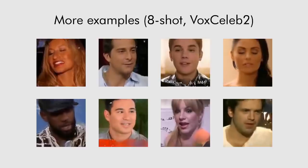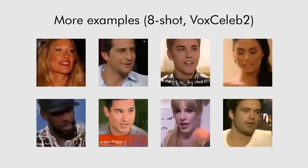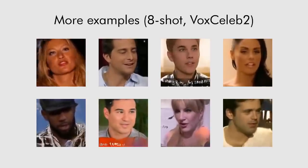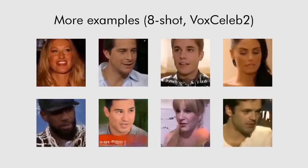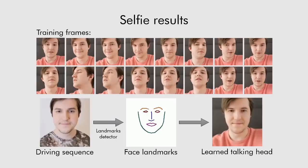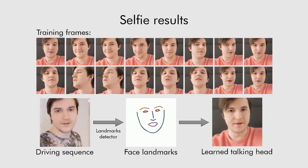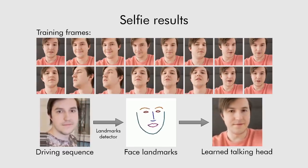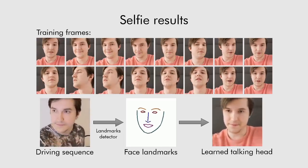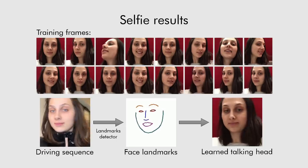Here we show more results for holdout identities on the VoxCeleb2 dataset that were unseen by the system at the meta-learning stage. These talking head models were obtained using eight frames, although in some cases there was limited diversity between the head poses in those eight frames. We also show how the system generalizes to selfie photographs, which are quite different from YouTube video frames in the VoxCeleb2 dataset. Here is one more talking head model learned on 16 selfie photographs.